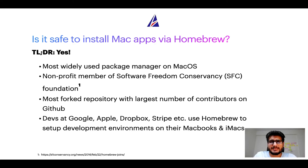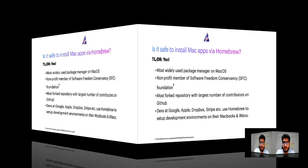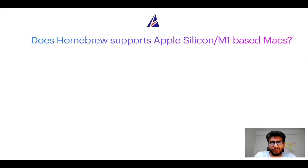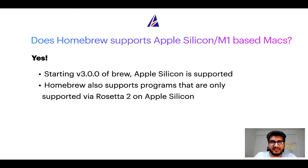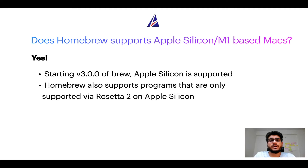Many developers at organizations like Google, Apple, Dropbox, Stripe, etc. use Homebrew to set up different development environments on their MacBooks and iMacs. Can you use Homebrew to install programs on Apple Silicon, more popularly known as M1 MacBooks? Again yes — starting version 3.0 of brew, Apple Silicon is now supported. In fact, Homebrew also supports programs that are at the moment only supported via Rosetta 2 on Apple Silicon.